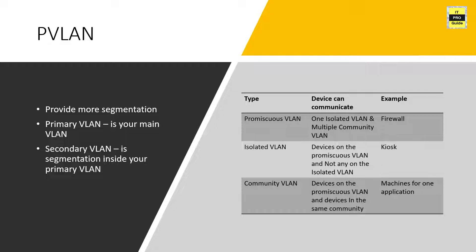Now let's move to private VLAN. The key point about private VLAN is that it provides segmentation of devices that are on the same broadcast domain — meaning you can further segment your VLAN. You segment your physical network by VLAN, and private VLAN offers further segmentation within your VLAN. DMZ is the most common use case for private VLAN. Private VLAN uses the concept of primary VLAN and secondary VLAN.